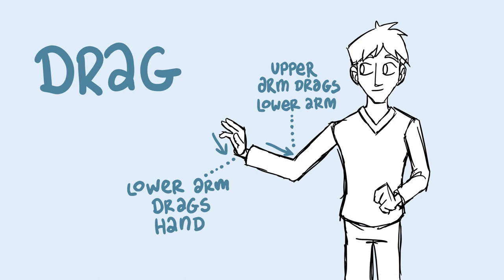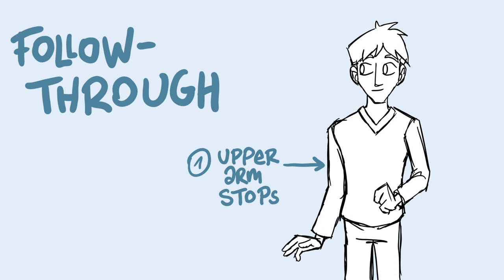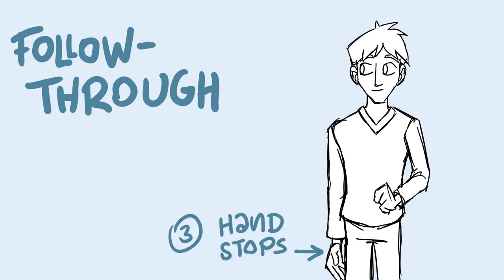Now everything keeps following its next part in the chain until the upper arm stops moving. The lower arm still has some energy left, so it goes on a little further before it stops too, which leaves the hand to do the last follow through in the chain.